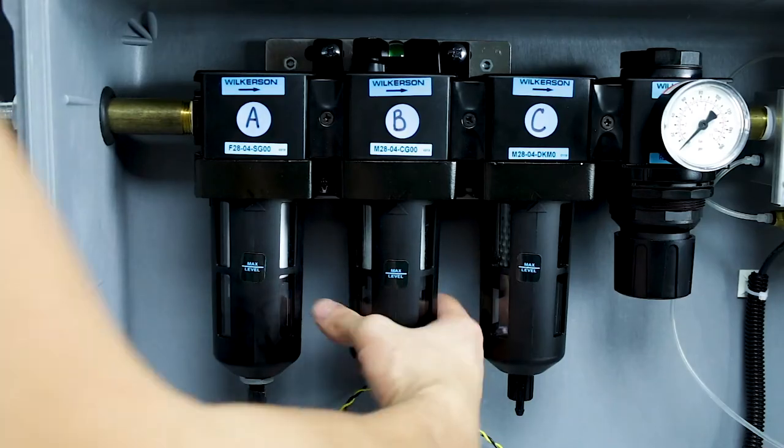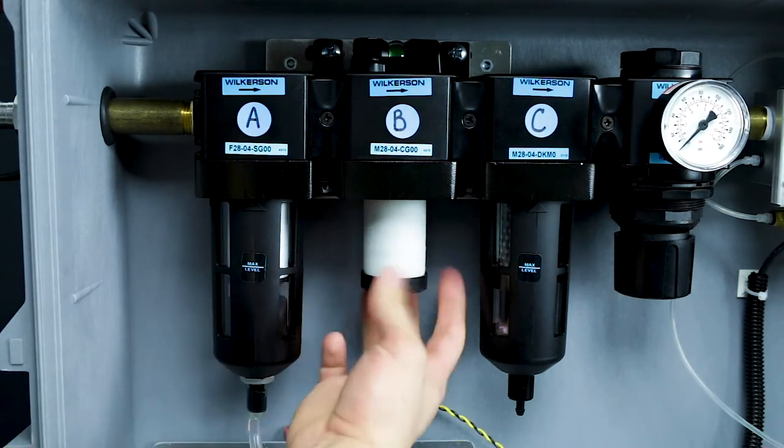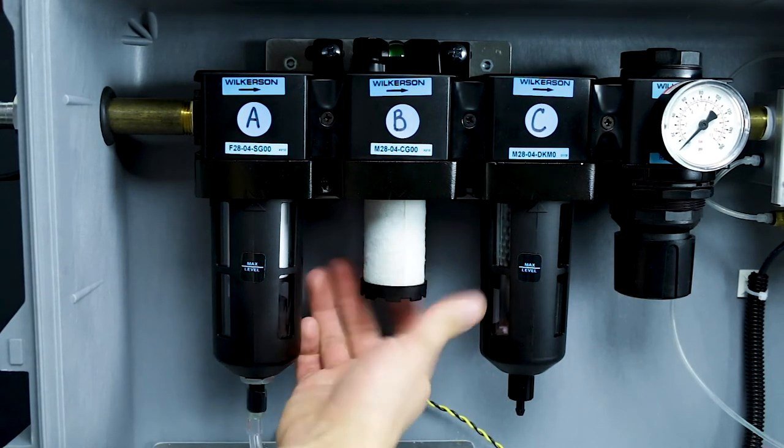For Position B, the 0.01 micron coalescing filter, twist left until released, then simply replace with a new filter.